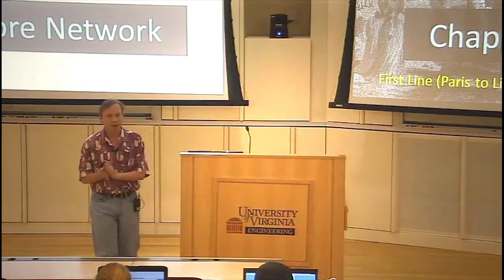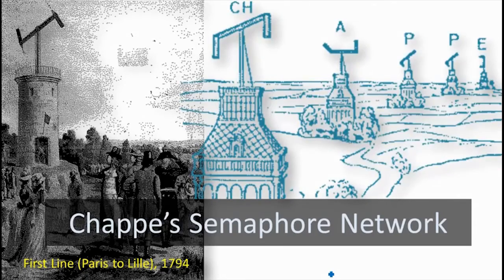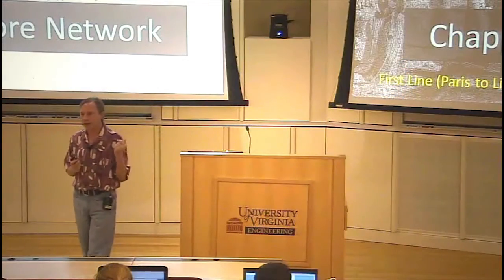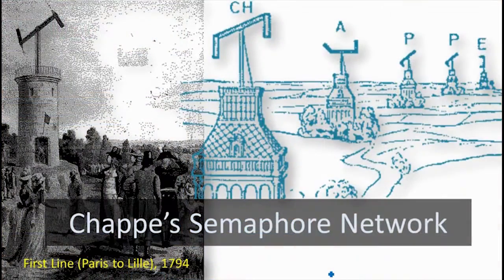Networking goes back a long time. It certainly goes back well before this one, but I'm going to use Claude Chappe's semaphore network in France in the 1700s and early 1800s as an example of a fairly sophisticated network that was in operation a long time ago. The way that network worked, you had these towers. The towers would have an operator or two working in them.